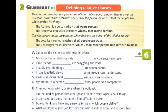The relative pronouns are optional when they are the object of the relative clause. This is the second type of defining relative clauses. Let's see: 'The loyalist is someone who — or that — people can trust.' The two sentences are 'the loyalist is someone' and 'people can trust someone.' In this case, 'who' or 'that' is replacing 'someone,' and 'someone' is the object of the verb — so the relative pronoun is optional.